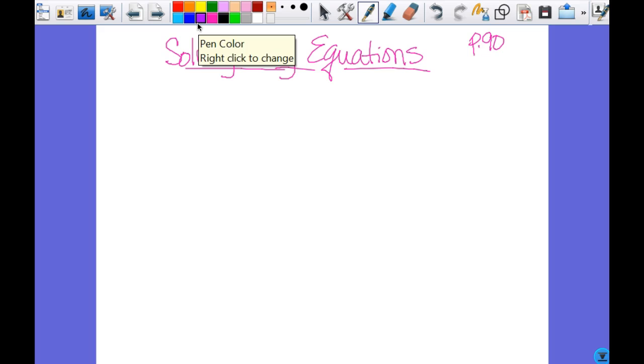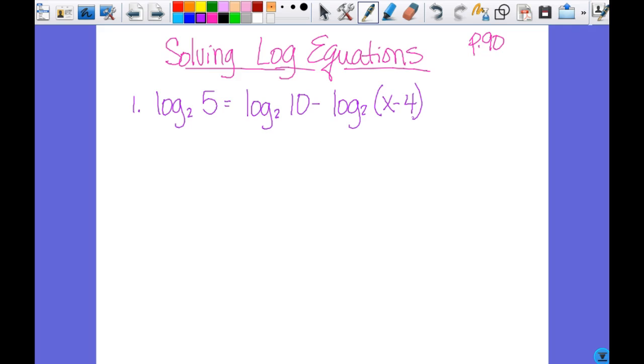So we're just going to do two because it's the same stuff you've been doing. It's just that you're now actually solving an equation and having to check it. All right, so we are going to start with log base 2 of 5 equals log base 2 of 10 minus log base 2 of x minus 4. So what we want to get to is to have the log with the same base on either side, but just a single log on either side. That's why we did the expanding and the condensing.